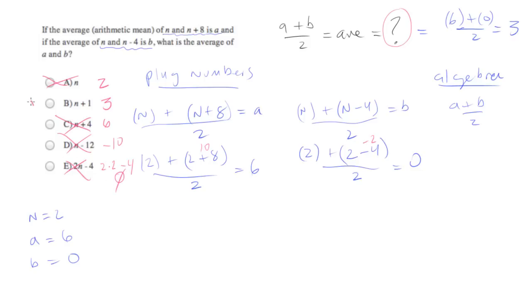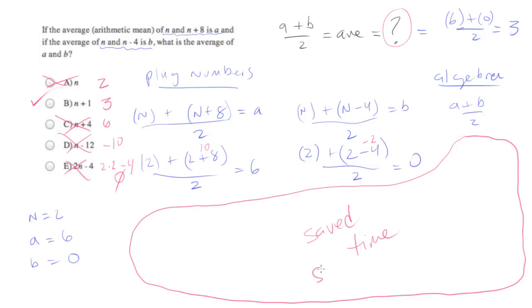And we're left with answer choice b, which is equal to 3. Look how much work we saved. You have to imagine all the garbage that we would have had to do if we had tried to use the algebra method. This is all saved time. Skipped errors. Two really good things for you to do.